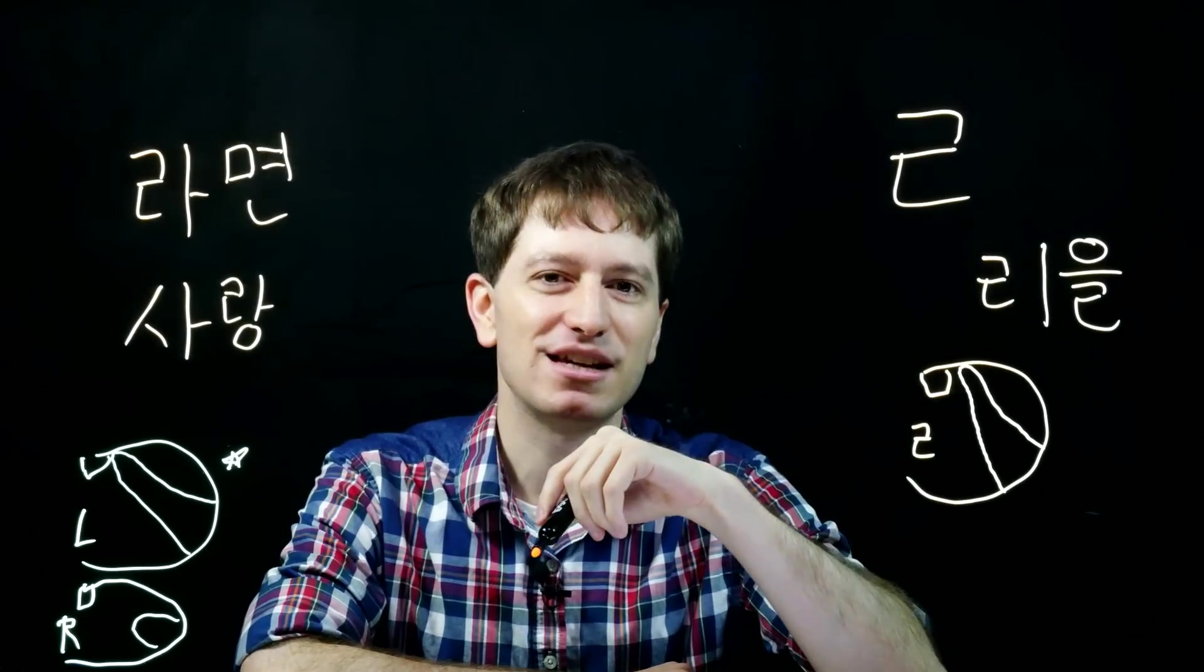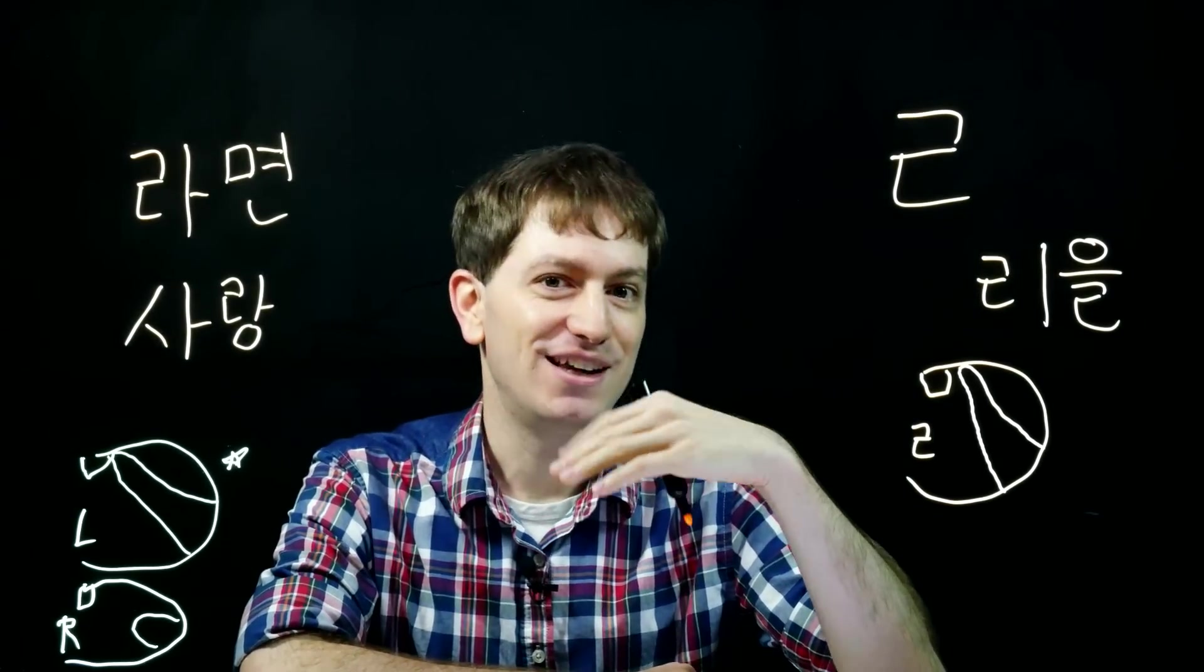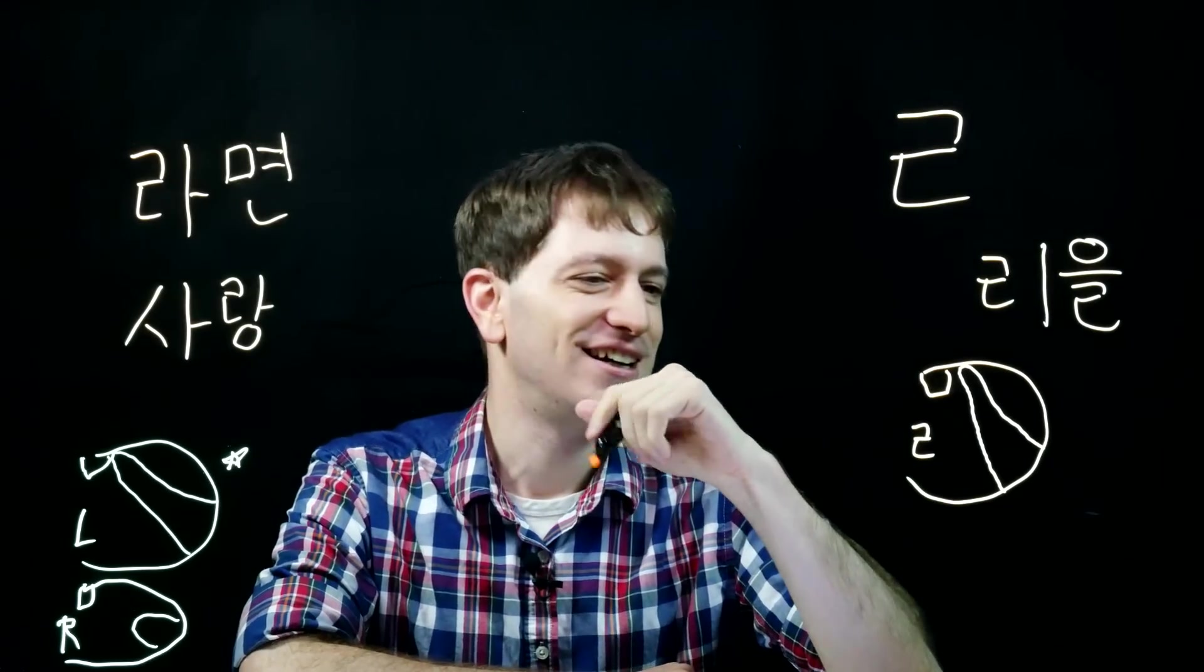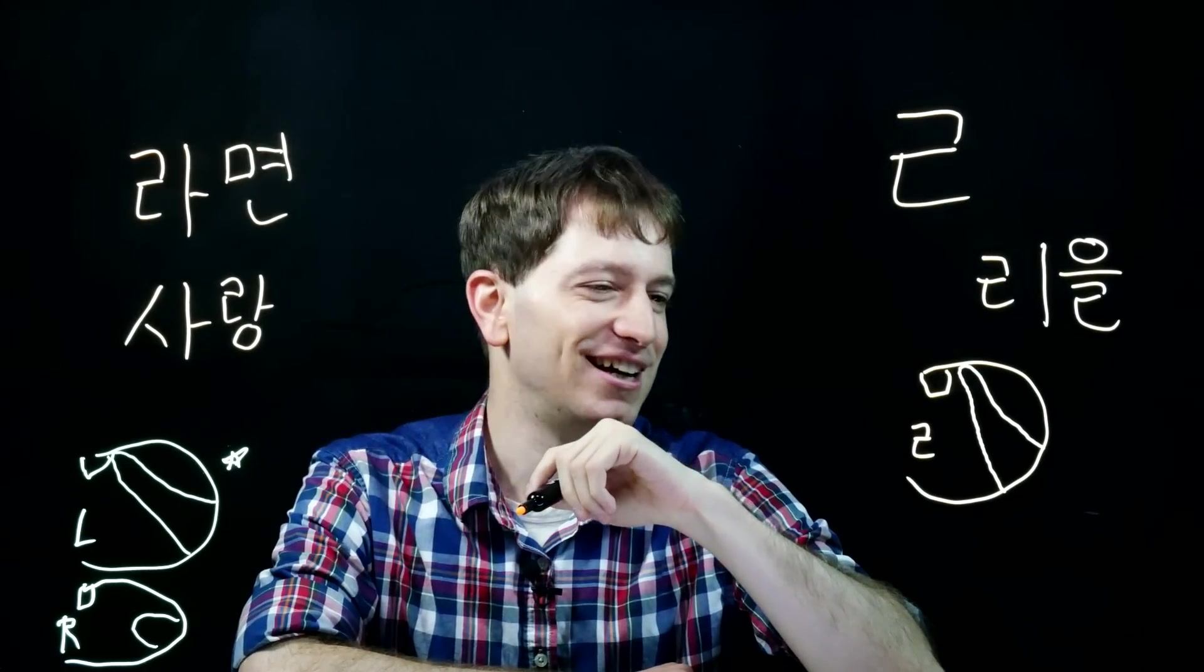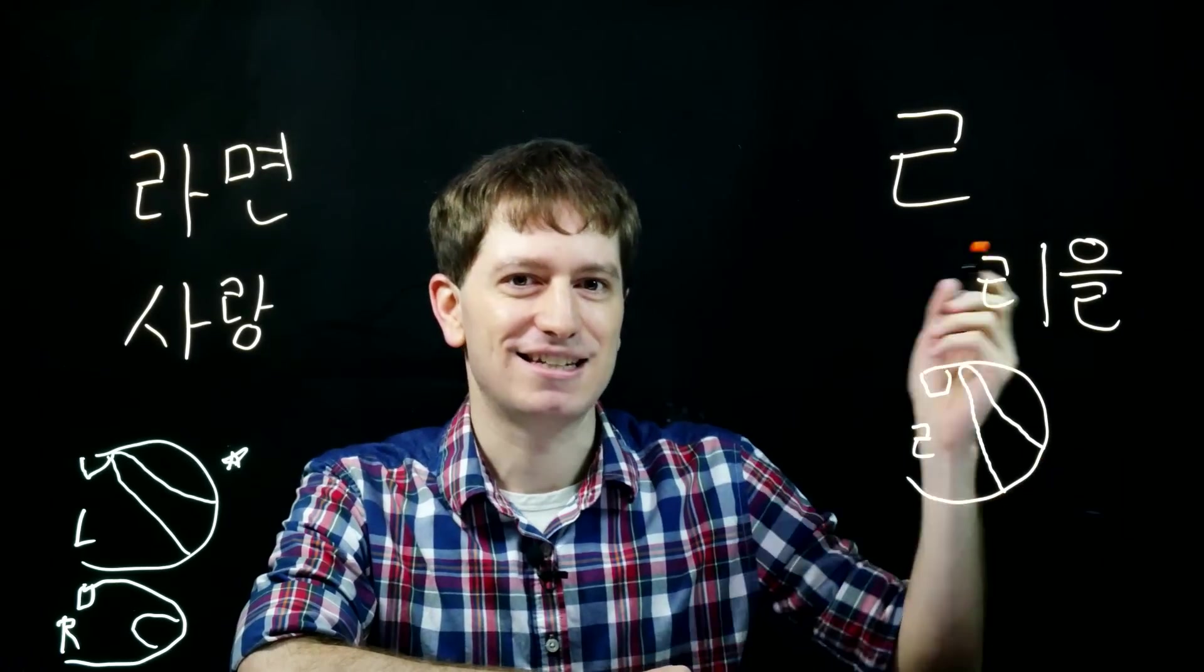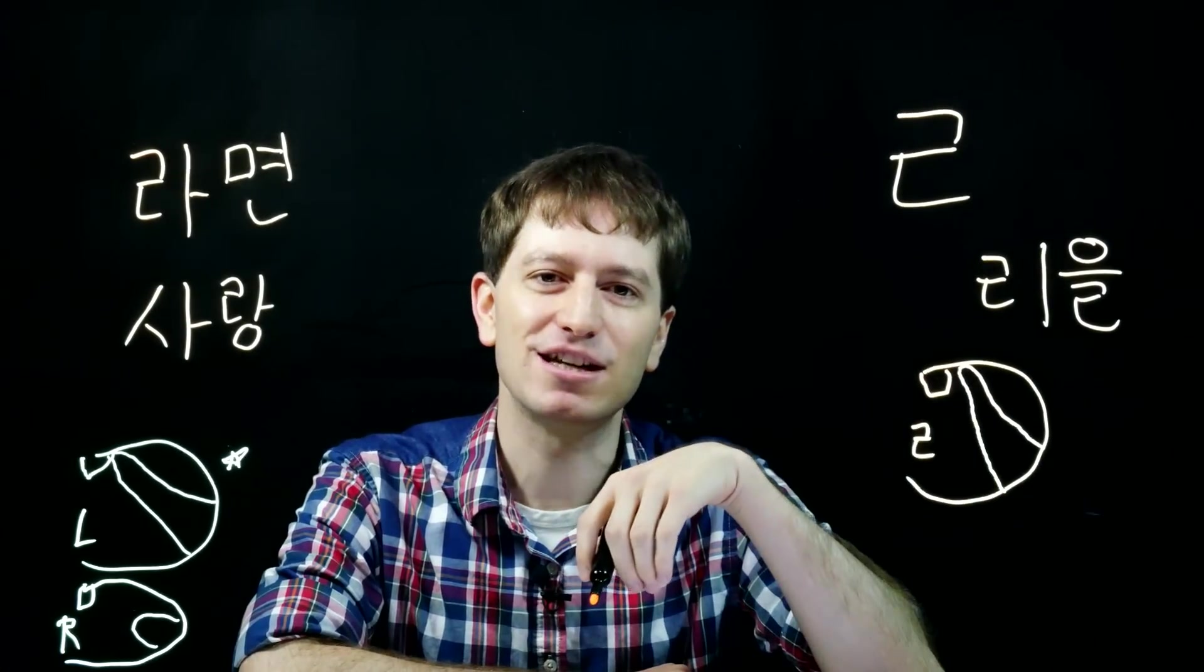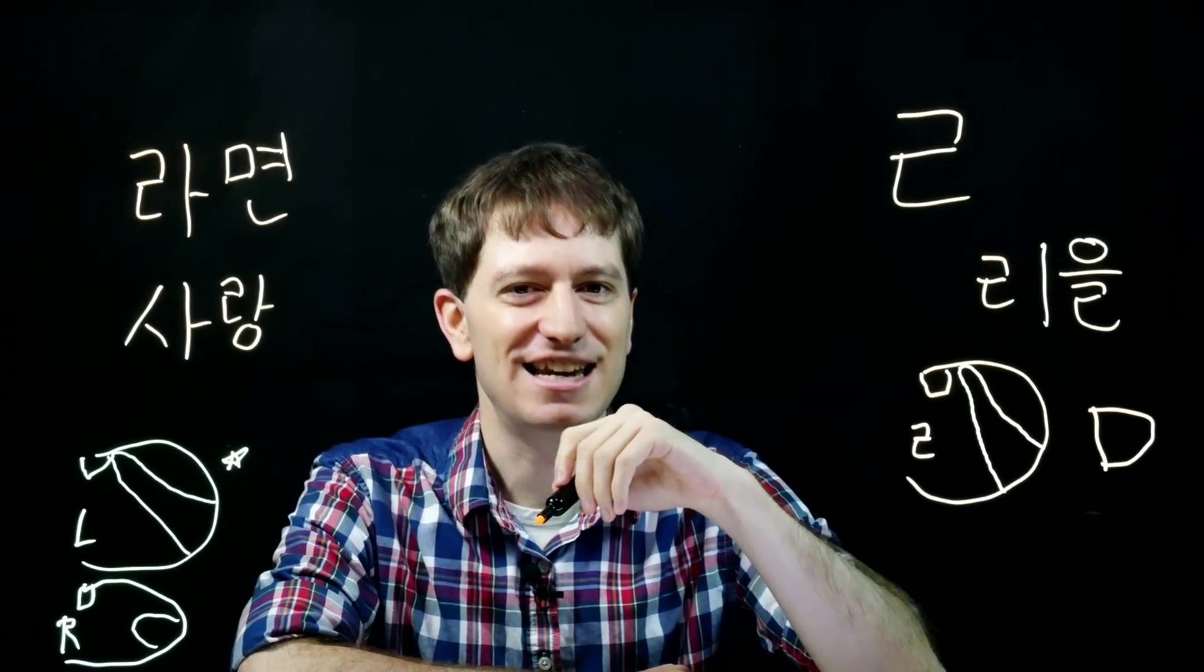This tongue position is actually already in the English language. So if you speak English natively, you can already move your tongue to this position and make a sound. But in English, it's neither L or R. So what is it? Actually, this is the tongue position where you would say D in English.